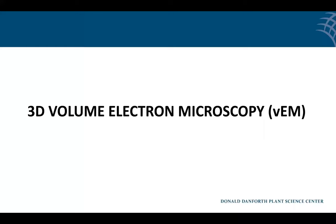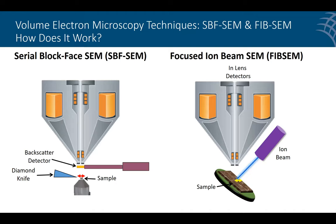My final topic is volume electron microscopy. Array tomography is considered volume EM, but here I'm talking about techniques where we keep the block intact and image the block face. One technique is called serial block face SEM — there's actually a diamond knife microtome inside the SEM chamber, and it removes very thin layers, then the electron beam scans across and creates an image from backscatter signals. With focused ion beam SEM, rather than a physical knife, a gallium ion beam repeatedly scans back and forth, removing only a few nanometers at a time, and you image the block face in backscatter mode to build up three-dimensional volumes.